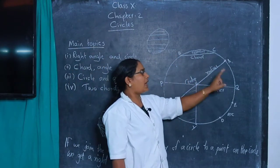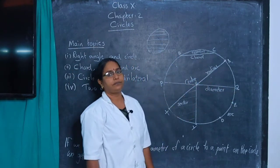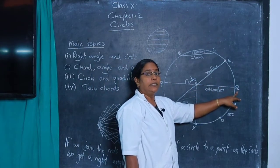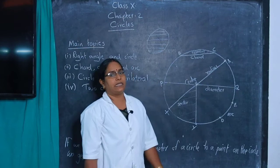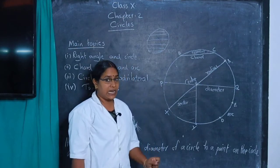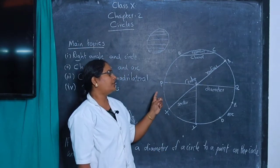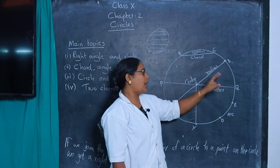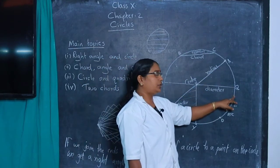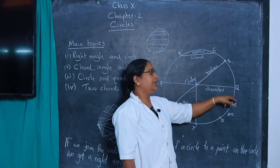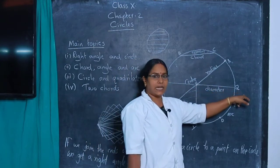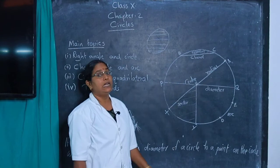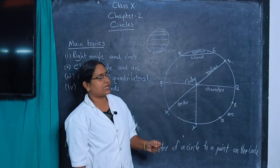One chord passes through the center, and that chord is called a diameter. A diameter is the largest chord of the circle. A line segment joining two points of the circle and passing through the center is called a diameter.